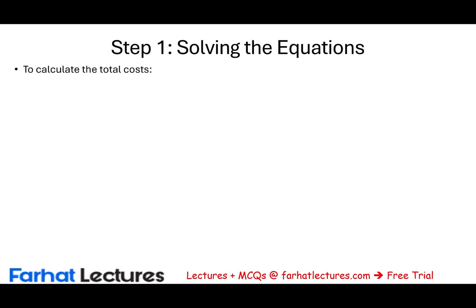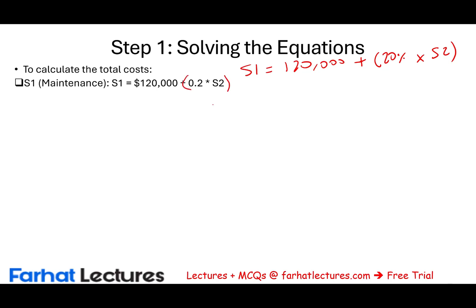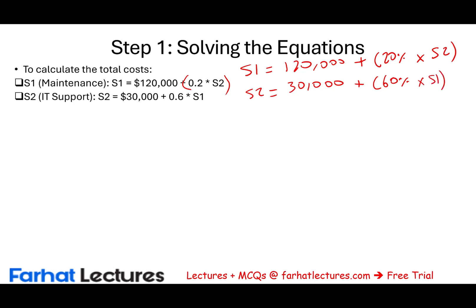We set up two linear equations. S1 equals $120,000 plus 20% of S2, because S1 receives 20% of S2's support. S2 equals $30,000 plus 60% of S1, because S2 receives 60% of S1's support. These are our two equations, and we need to solve for S1 and S2 by substitution.